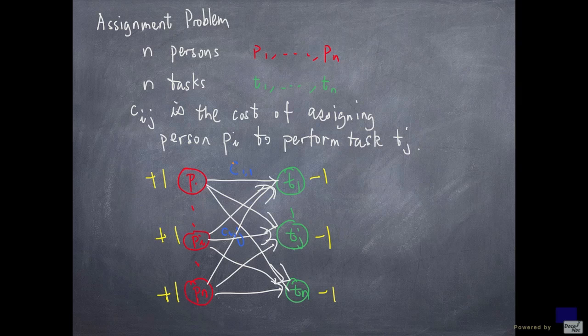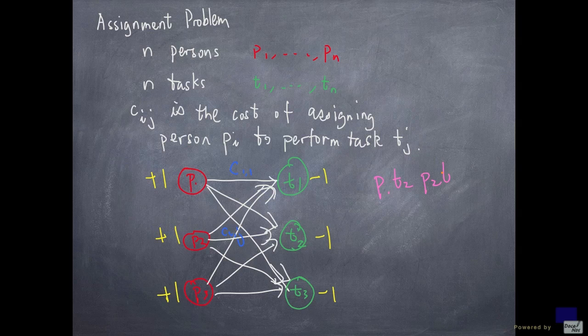And for example, if p1, say I'm looking at a 3-person network, say this is now 1, 2, and 3. Suppose the assignment is p1 to t2, p2 to t1, and p3 to t3.